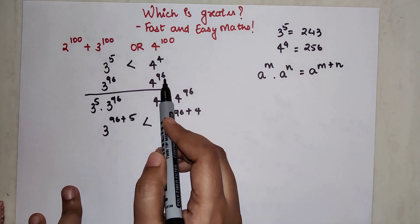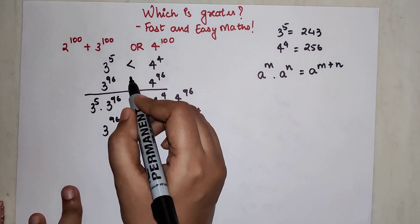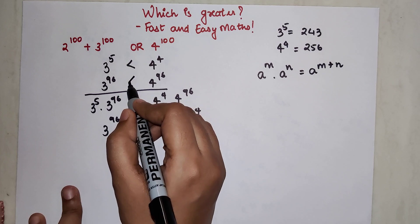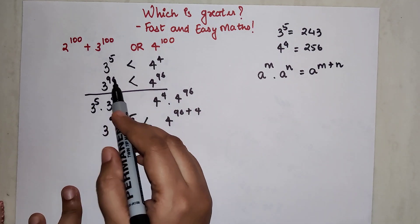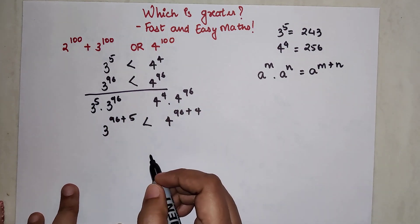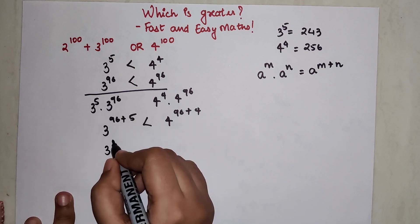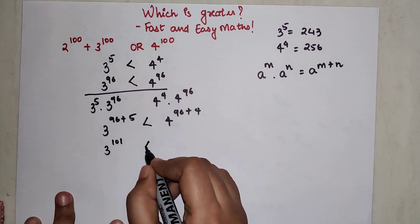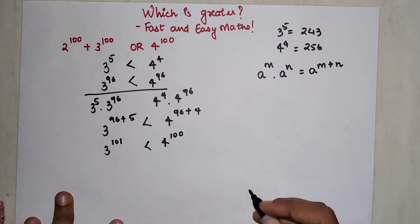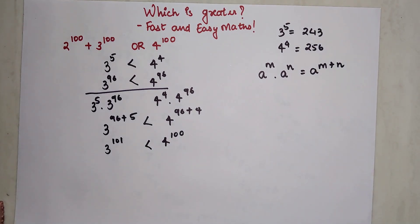We can definitely carry this inequality down because these two were raised to the same power. I can say that 3^96 will definitely be less than 4^96, so here this becomes 3^101 which is less than 4^100. I hope till now you are clear.